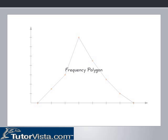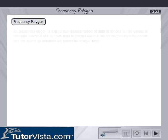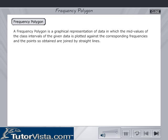Frequency Polygon. A frequency polygon is a graphical representation of data in which the mid-values of the class intervals of the given data is plotted against the corresponding frequencies and the points so obtained are joined by straight lines.